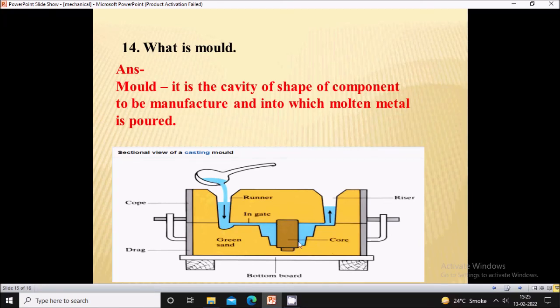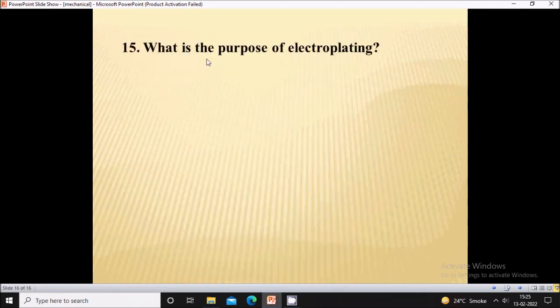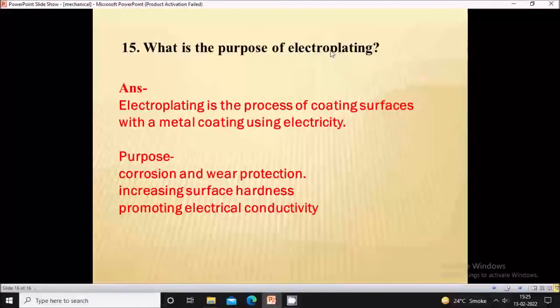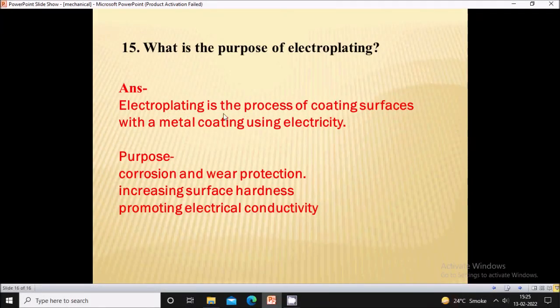What is the purpose of electroplating? Electroplating is the process of coating surfaces with metal coating using electricity. The purpose is to avoid corrosion and wear, to increase surface hardness, and to promote electrical conductivity.